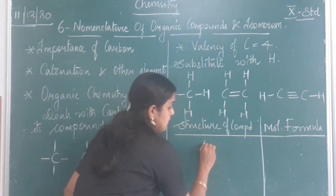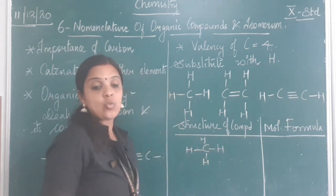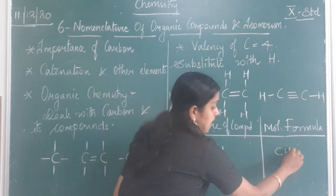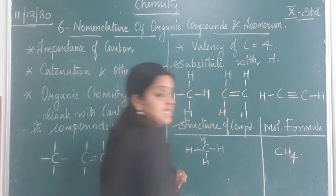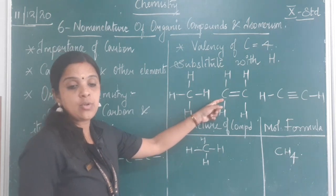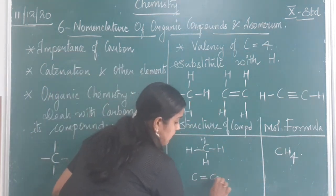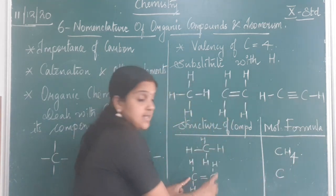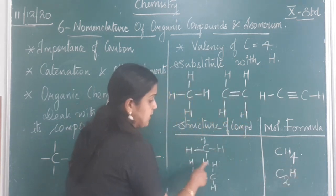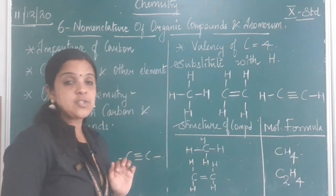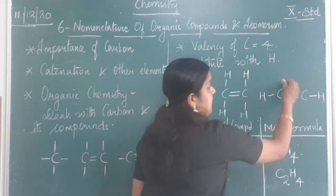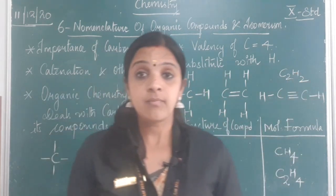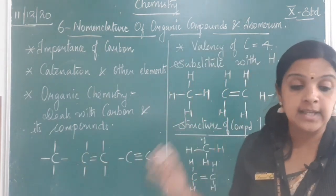Now let me write these structures and the molecular formula. For the single carbon with four hydrogens: C is there, hydrogen is there — one carbon, four hydrogens — so CH4. For the double-bond structure with two carbons and four hydrogens: C2H4. Similarly, for the triple bond with two carbons and only two hydrogens: C2H2. So with this we have written the structure of the compound and the molecular formula, as shown in your textbook.